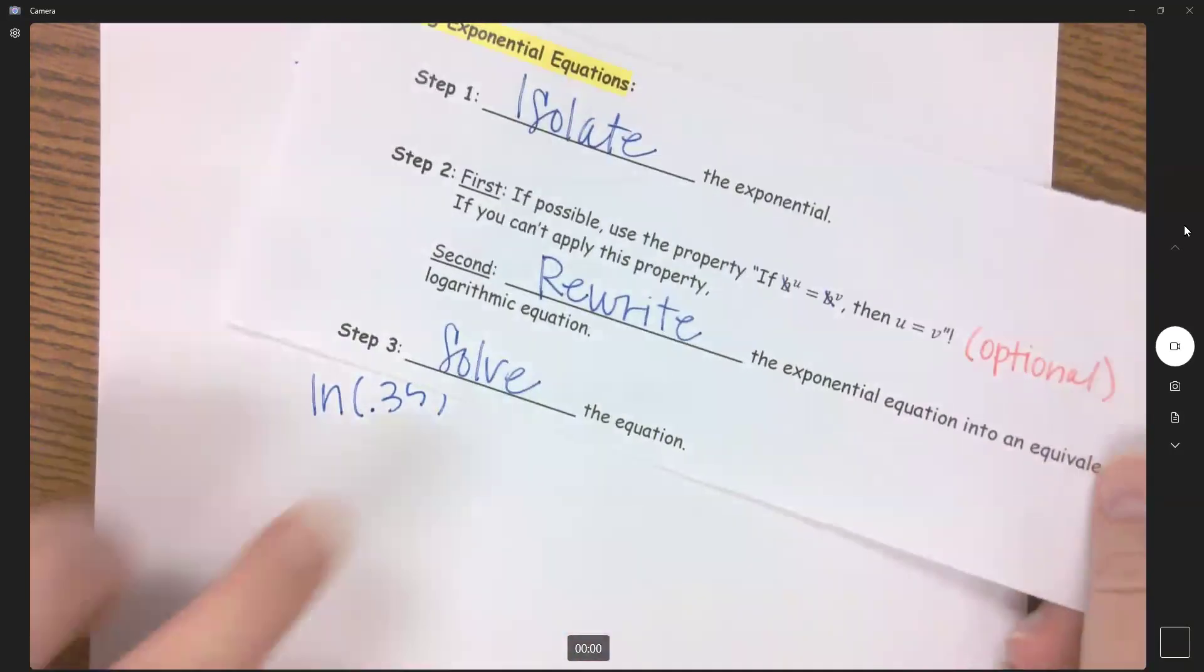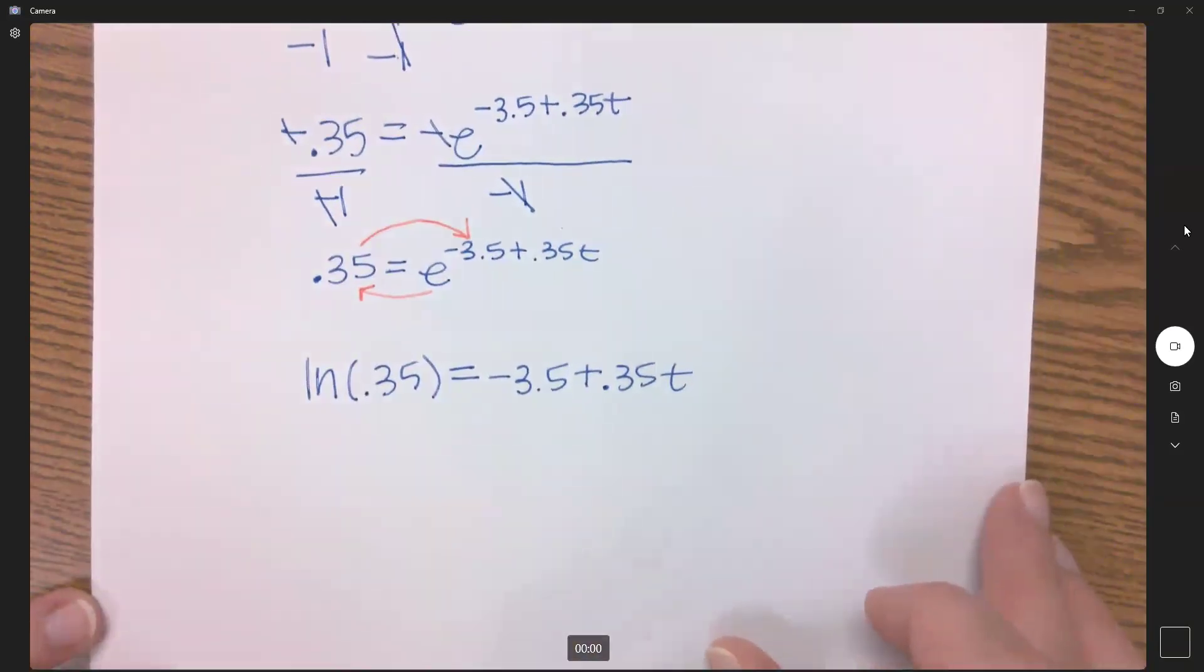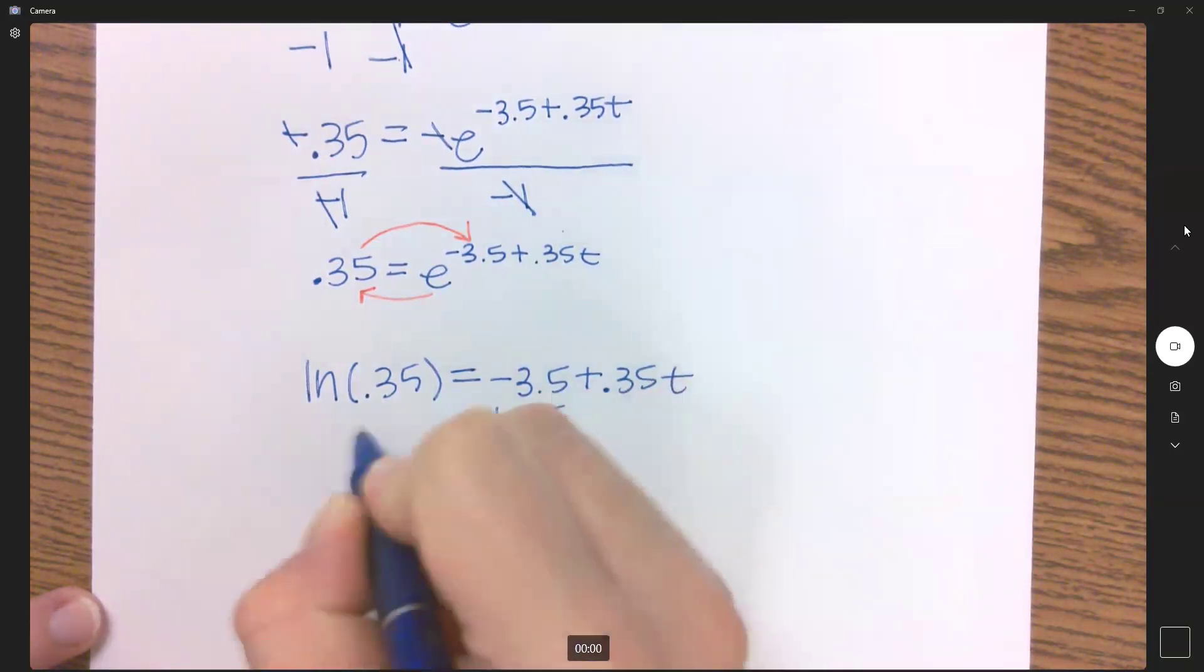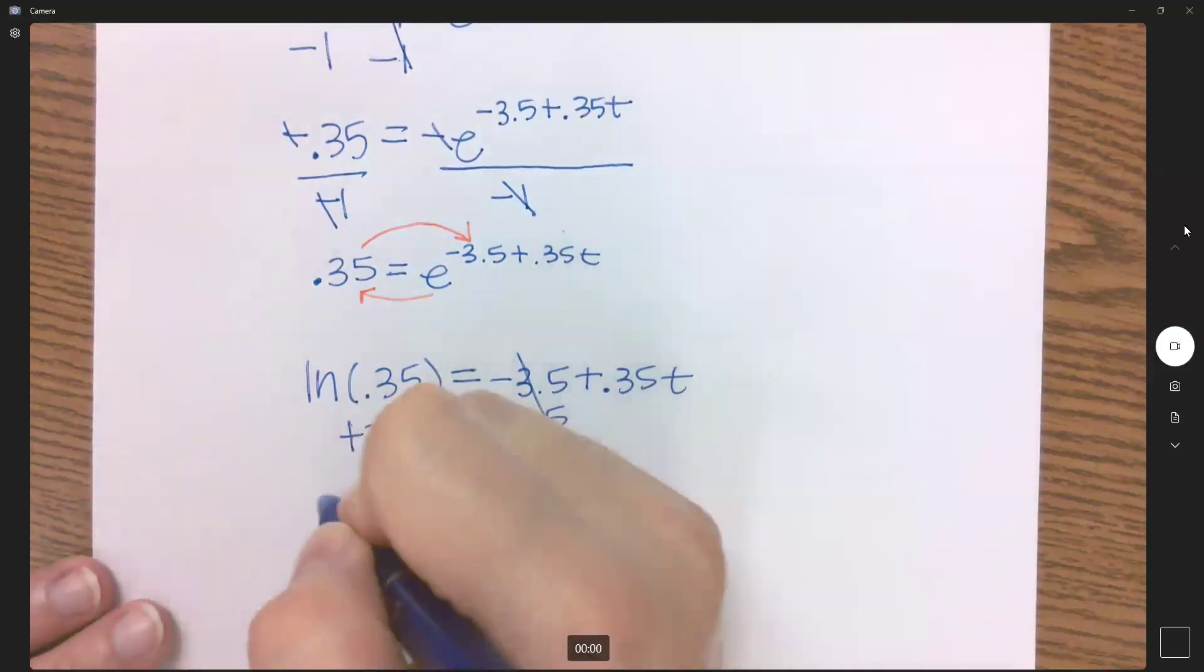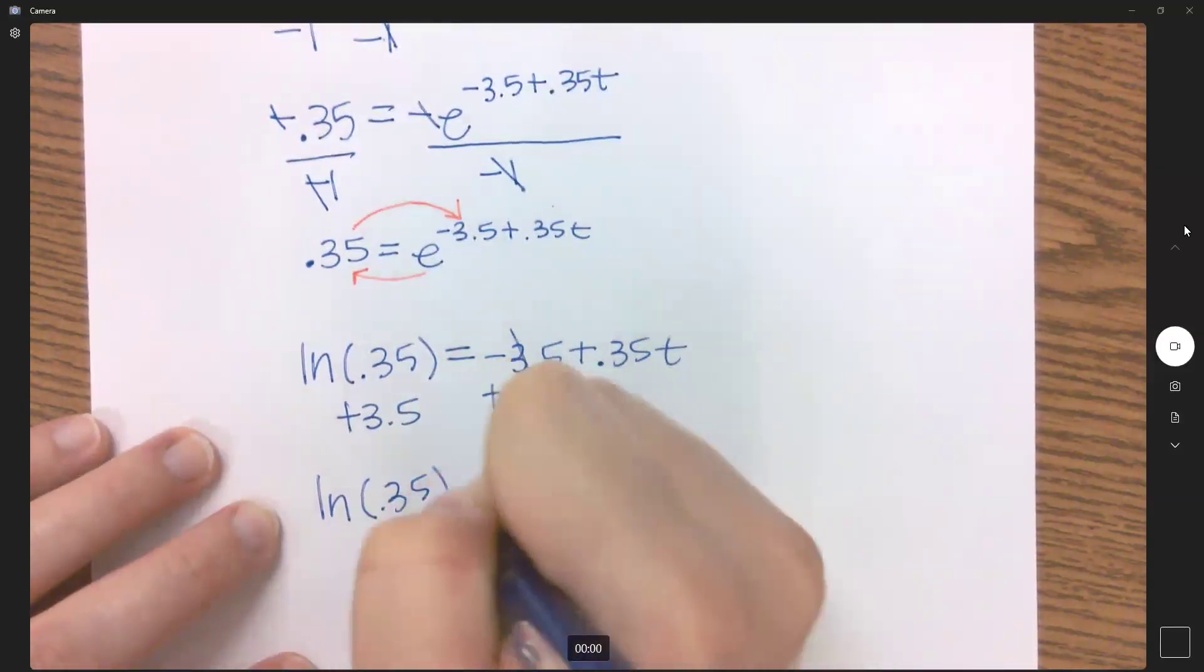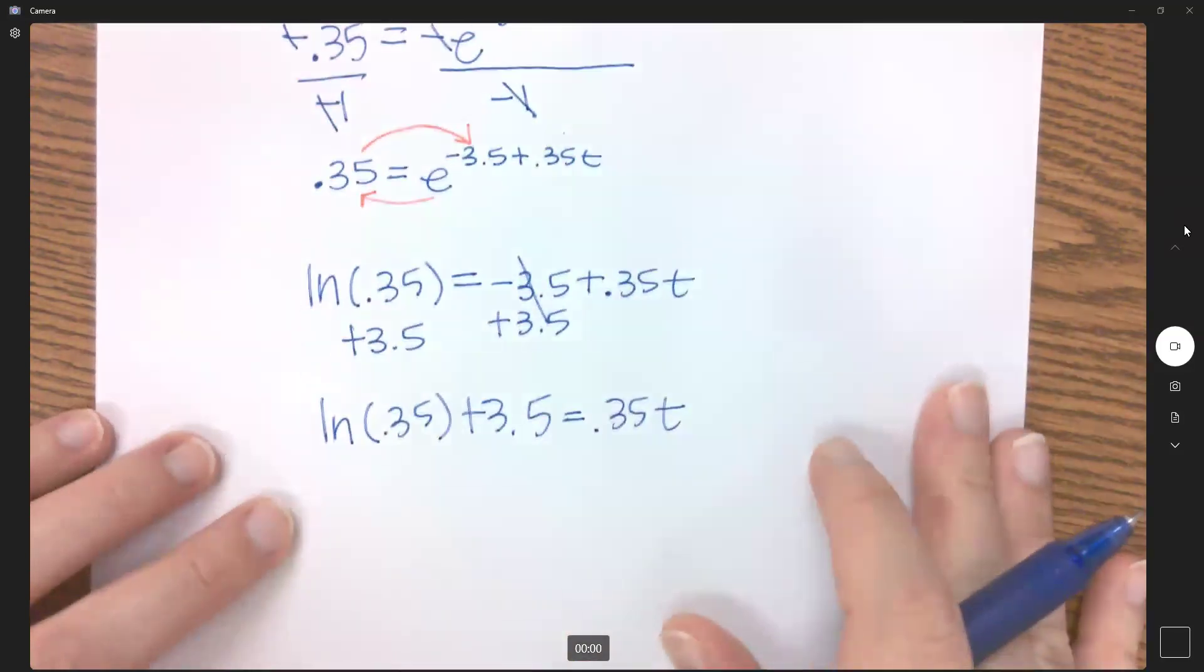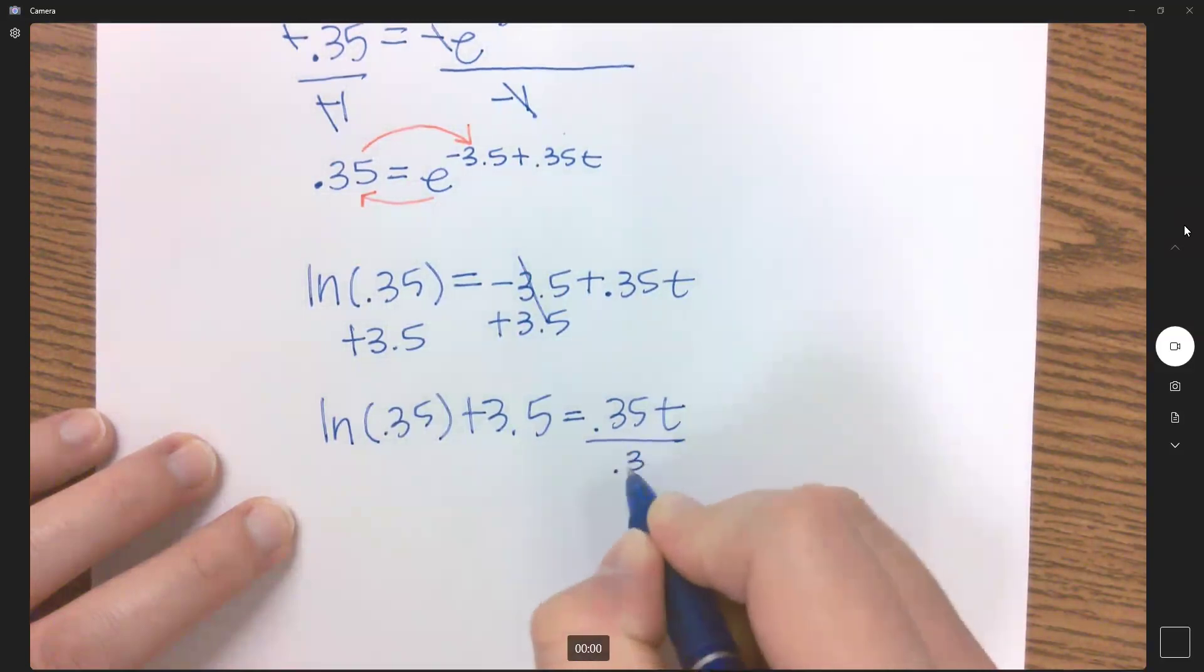Once we rewrite, now I need to solve my equation. This is a two-step equation. First thing I'm going to do is add this constant over. These can't combine, so this is just simply the natural log of 0.35 plus 3.5 equals 0.35t. And now my last step to get t by itself is to divide that number over.